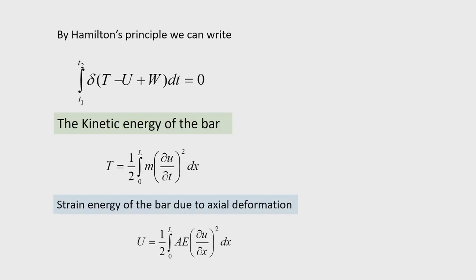Hamilton's principle including non-conservative forces: W is the work done due to non-conservative forces. In a dynamic system, we encounter damping as well as externally applied forces. So W will include the work done by damping as well as the externally applied force.